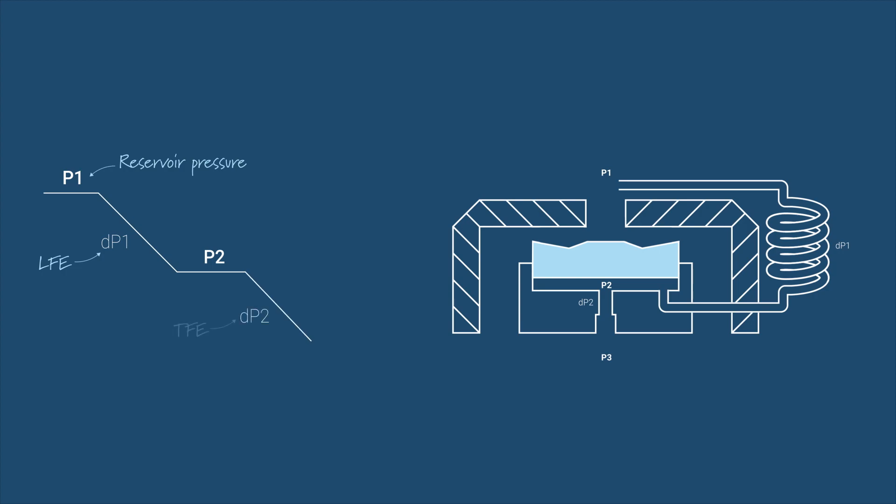The second pressure drop occurs in the TFE. The last pressure point is P3. This signifies the pressure inside the well bore, which is controlled at the surface.